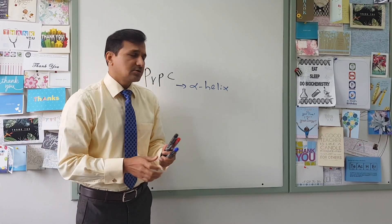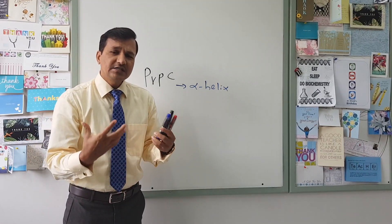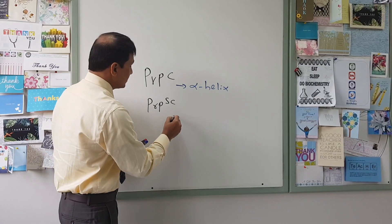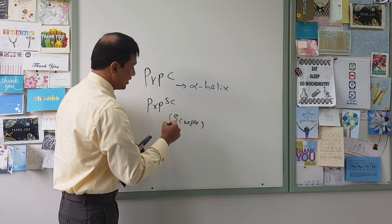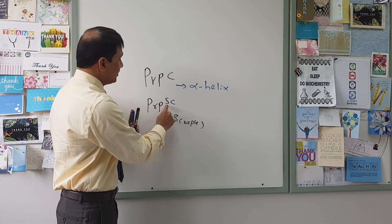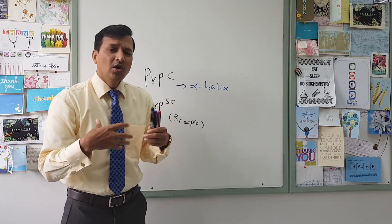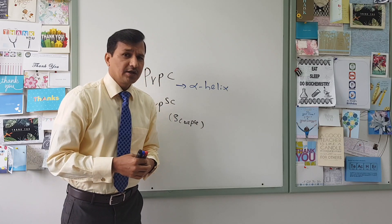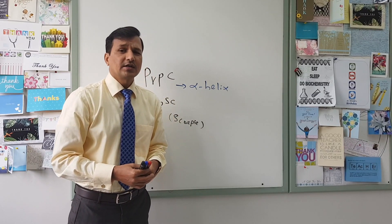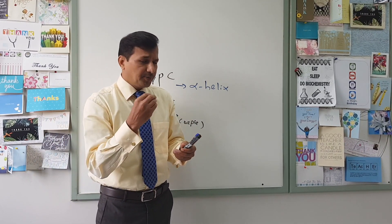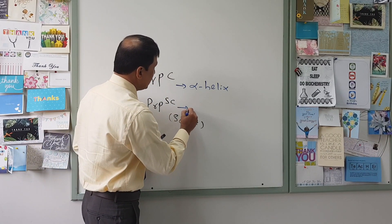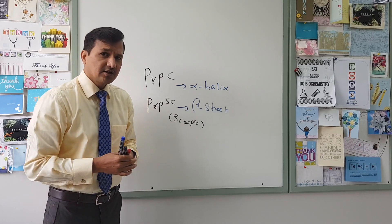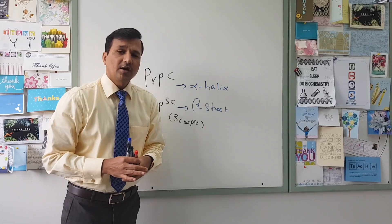In prion disease, this PrPC will be converted into a disease-causing prion protein, referred to as PrPSc — S for scrapie. Scrapie is a type of prion disease seen in sheep. PrPSc is an abnormal form of prion protein. The conformation of this disease-causing PrPSc is in a misfolded form, and the predominant type of conformation seen in PrPSc is beta sheet conformation. So PrPC, which is predominantly composed of alpha helix, is converted into PrPSc with predominantly beta sheet conformation.